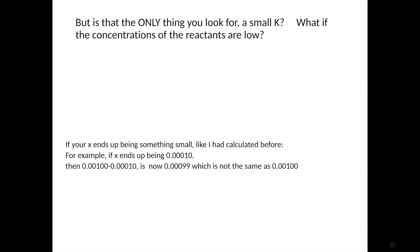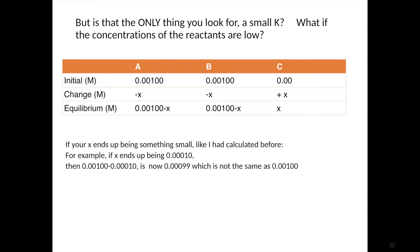Here's another scenario. Is it only when you have a small K do you always make an assumption? What about if the concentrations of the reactants are low? So here's an equilibrium again, but this time, as you can see, our A and B are also pretty small. 0.00100 both of them. So if your X ends up being something small, like I had calculated before, then this is what you end up with. You end up with 0.00100 minus the amount of X. And here you have a value that you kind of can't ignore. 0.00099. It's not the safest thing to do an assumption. So how do we know?